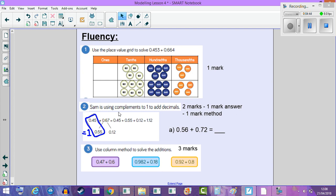In this method, Sam is using complements to one to add decimals. Here we have a two-mark question, one mark for your answer and one mark for your method using complements to one whole. And number three says use column method to solve these additions. It's very important that we line up our columns accurately with the decimal point.